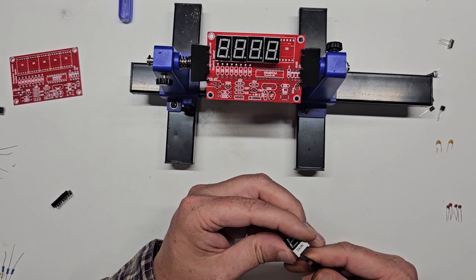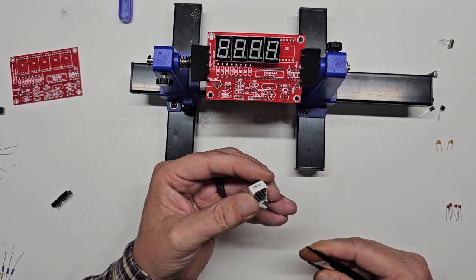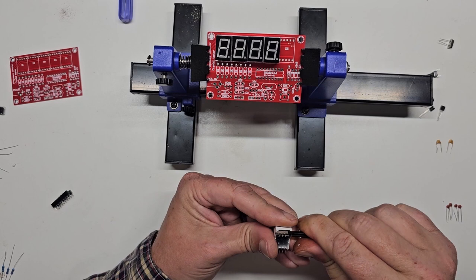I decided to start with the character display. You want to make sure the legs are straight. Take your time with this so you don't break them. This kit has a lot of bent pins due to bad shipping.